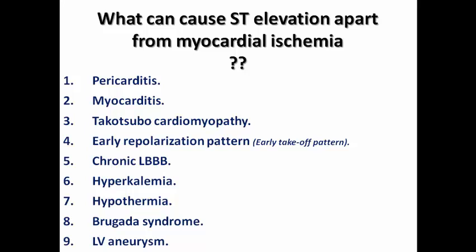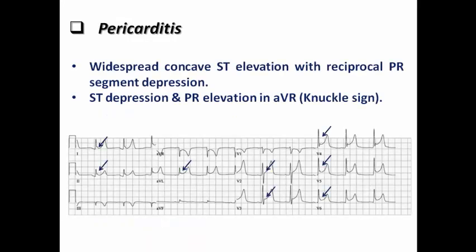In pericarditis, we see widespread concave ST elevation with reciprocal PR segment depression — the characteristic pattern is PR segment depression across multiple leads. There is also a knuckle sign: ST depression with PR elevation in lead aVR, because aVR represents the right upper quadrant and shows opposite criteria. This combination of widespread ST elevation, reciprocal PR depression, and knuckle sign is suggestive of pericarditis. The chest pain characteristics should also be analyzed to determine whether they are more suggestive of pericarditis or angina.